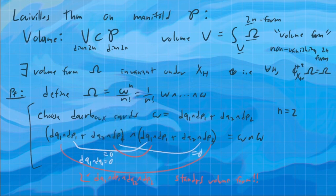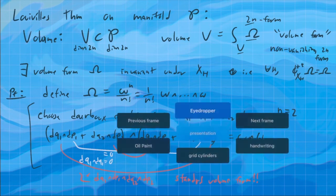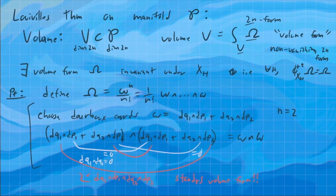That is to say, in local coordinates, so in general, omega is dq1 wedge dp1 wedge dot dot dot wedge dqn wedge dpn. That's what the n factorial is for, to make this equal to 1. So now here's the actual proof.